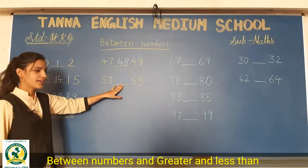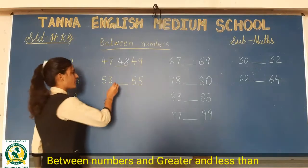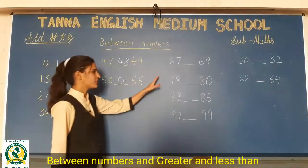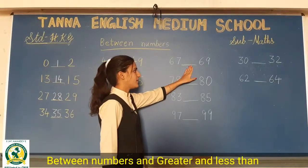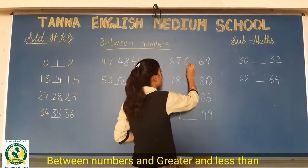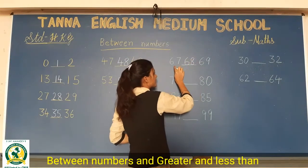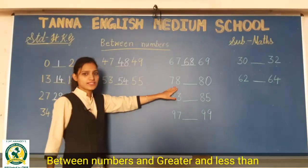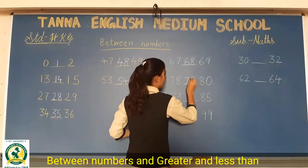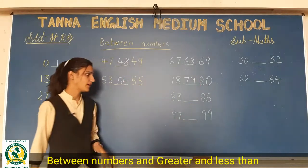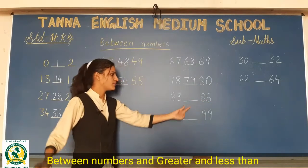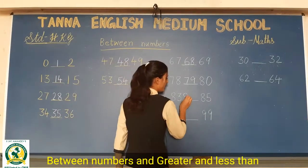Then 53, 54, 55. So, yaha pa aapko 54 likhna hai, ok? Next line 67 blank 69. So, yaha pa 79 likhna hai. Then 83 dash 85. So, what comes in between? 84.